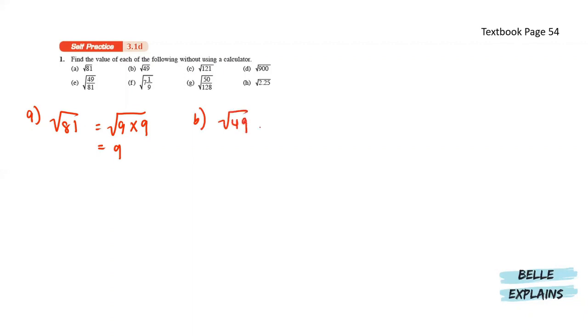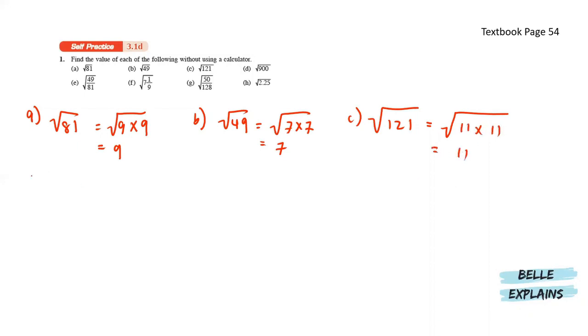Next for 3.1d, find the value of each of the following without using a calculator. So here we have the square root of 81, which is actually the square root of 9 times 9, so that will give us 9. Next for B, we have square root of 49 and this is actually the square root of 7 times 7, so that will give us 7. This gives us the square root of 11 times 11, which is 11. Next for D, we have the square root of 900, so we have the square root of 30 times 30 and that will give us 30.